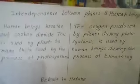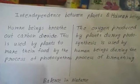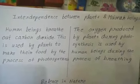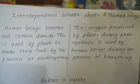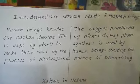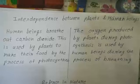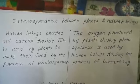Now, interdependence between plants and human beings. Human beings breathe out carbon dioxide, which is used by plants to make their food by the process of photosynthesis. The oxygen produced by plants during photosynthesis is used by human beings during the process of breathing. In this way, both are interdependent.